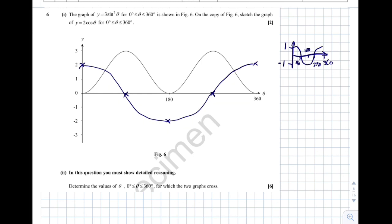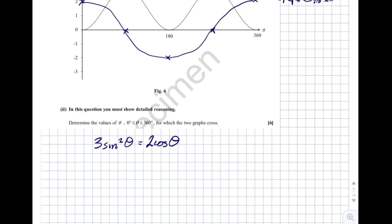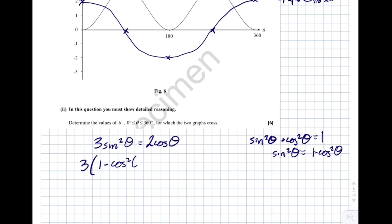In this question you must show detailed reasoning — you can't just use your calculator. Determine the values of theta for which the two graphs cross. There are probably two values — one between 0 and 90, one between 270 and 360. We need to set 3 sine squared theta equal to 2 cos theta, and since we have both sines and cosines, we use the identity sine squared theta plus cos squared theta equals 1, so sine squared theta equals 1 minus cos squared theta.